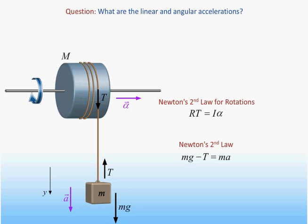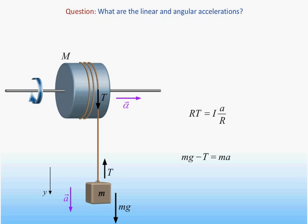The key here is to realize that since the string does not slip, the length of string that unwinds is equal to the arc length through which the disk turns. Therefore, we can use our result from last time that the linear acceleration of a point on the rim is equal to the product of the angular acceleration and the radius. Replacing the angular acceleration in the rotational equation by the ratio of the linear acceleration to the radius of the disk, we now have two equations that we can solve for the two unknowns: the tension and the linear acceleration.